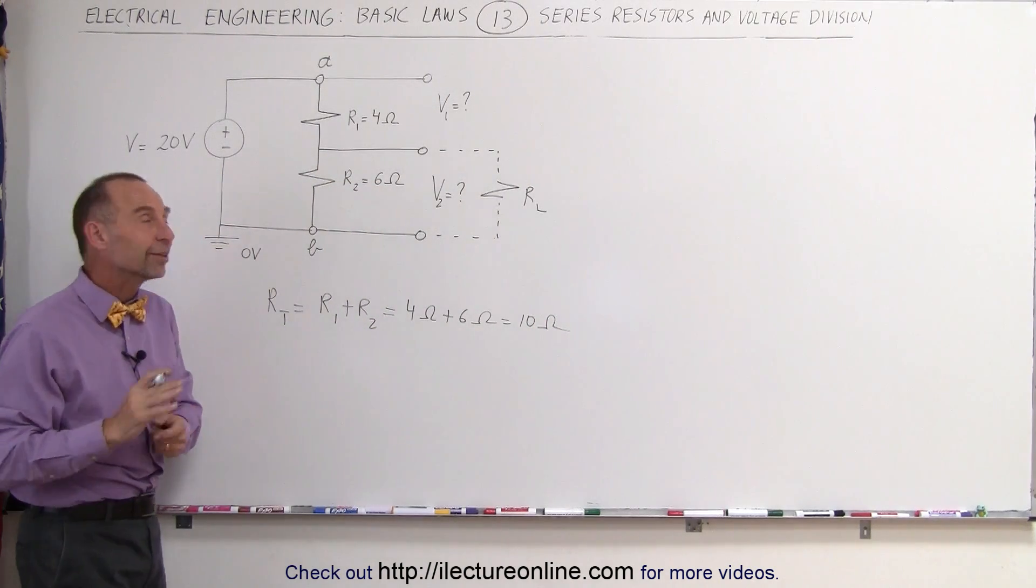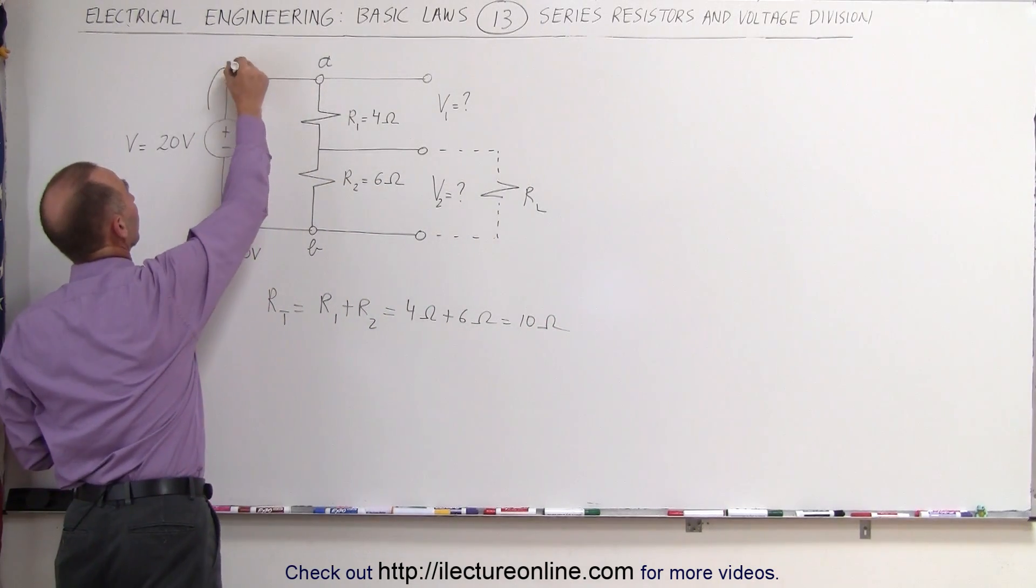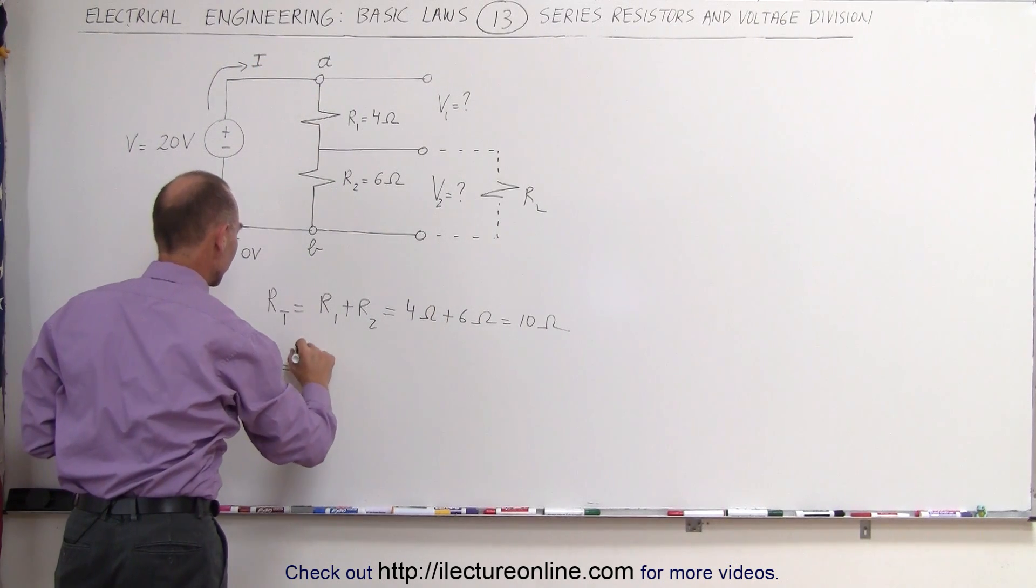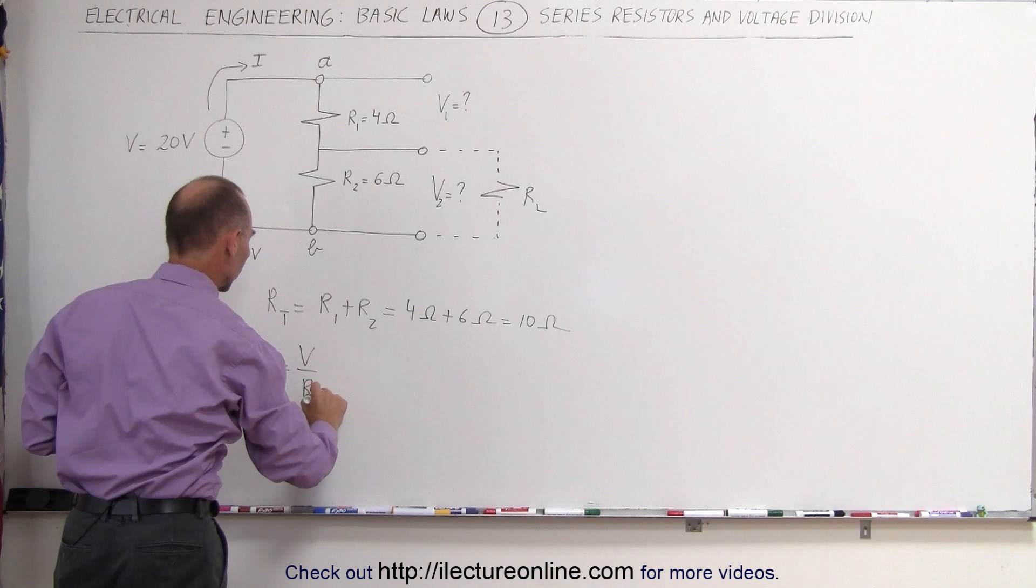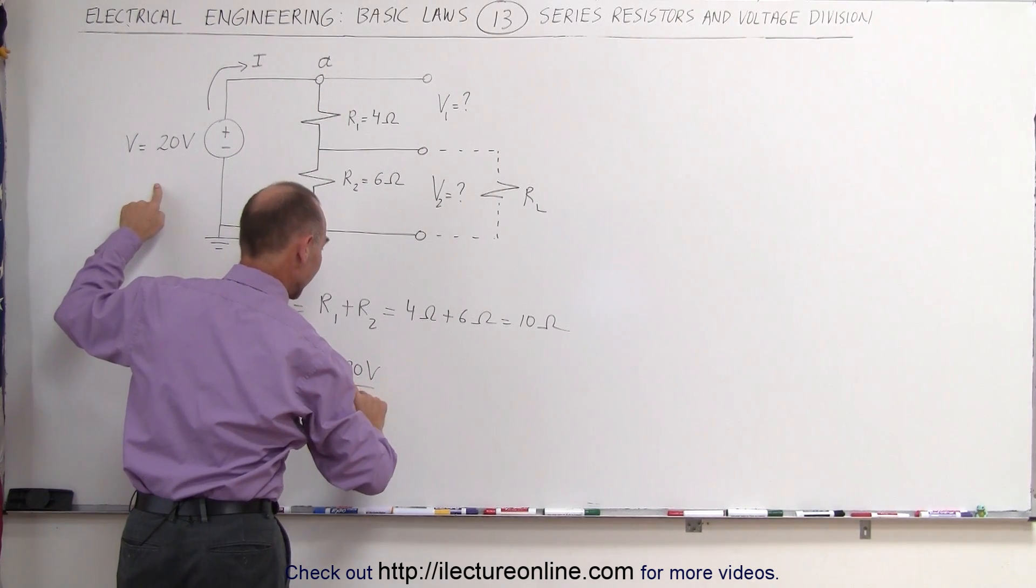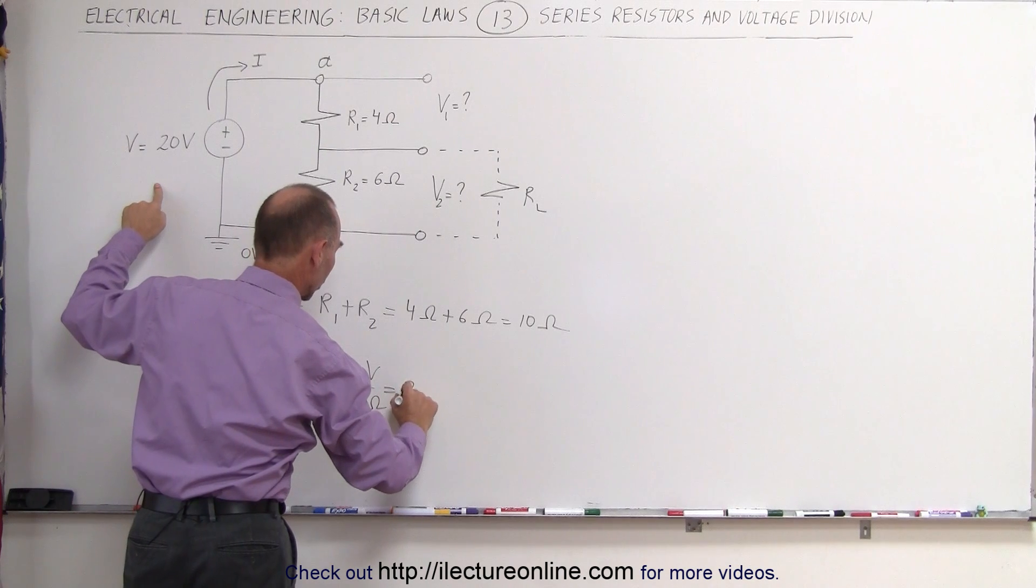From that, using Ohm's law, we can find the current in the circuit. So the current I can be determined using Ohm's law to be the voltage applied divided by the total resistance. In this case, that's 20 volts divided by 10 ohms, which is equal to 2 amps.